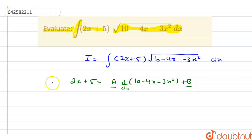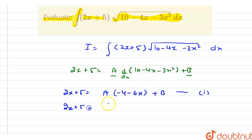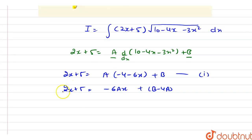After solving further, we have 2x + 5 equal to a into the differential of this value, which will be (minus 4 minus 6x), plus b. Now comparing the coefficients of x and the constant term, we get: minus 6a equals 2, and b minus 4a equals 5.